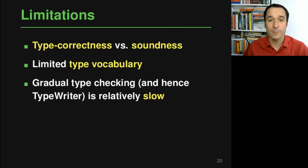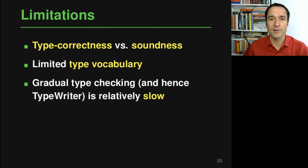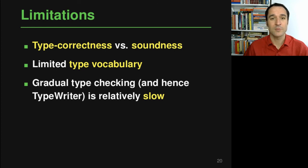There are some limitations that future work could address. First, type correctness does not equal soundness — a type-correct type is not necessarily the one the developer wants, since multiple type-correct options may exist. Second, TypeWriter is based on a fixed type vocabulary, so rare types cannot be predicted. Finally, TypeWriter relies on an existing gradual type checker which is not particularly fast, so tighter integration with type checking could lead to a faster overall approach.